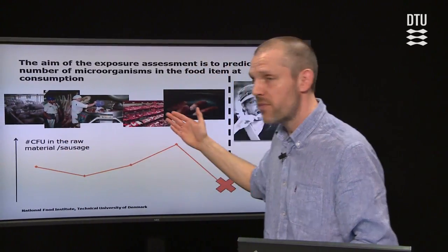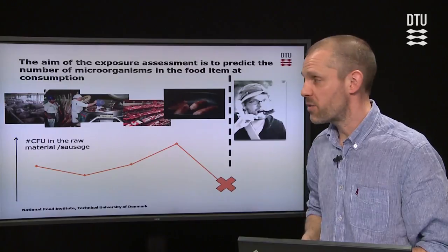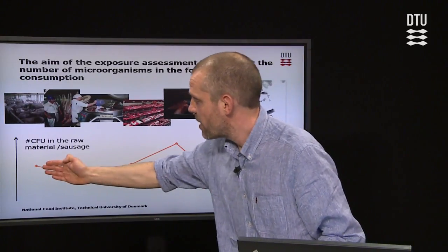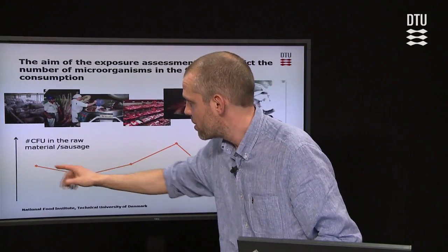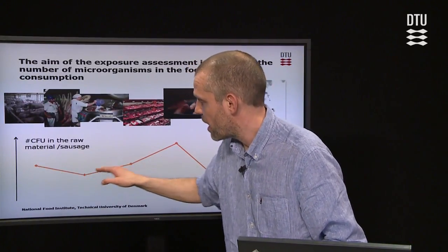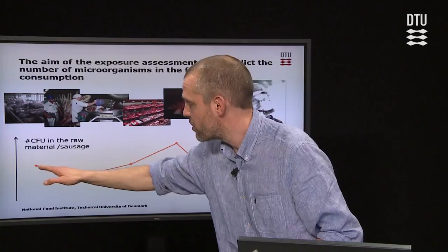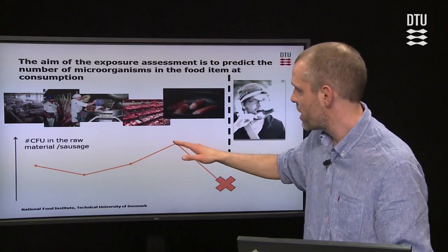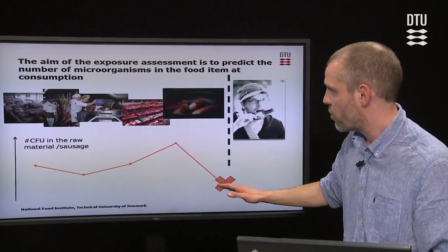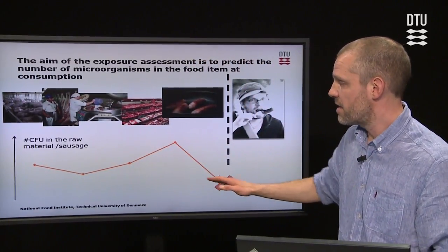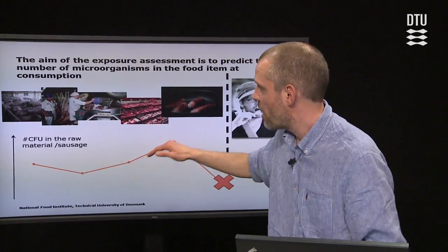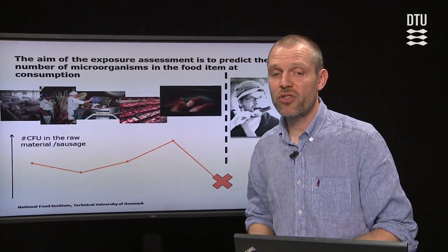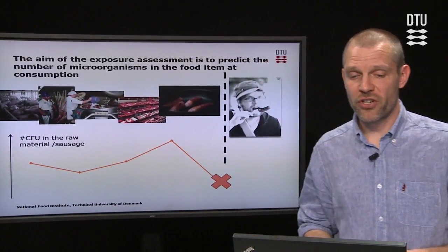They can grow and we can try to kill them. The aim of the exposure assessment is to describe what is happening with the pathogen along the production line. We have the same production line as before, and here we have a model explained by a line where we have a decrease, increase, increase, decrease. This describes what is going on with the pathogen along the production line.